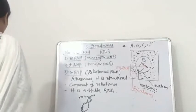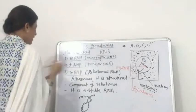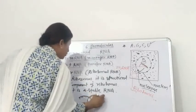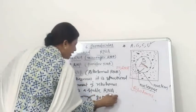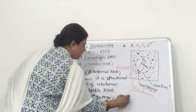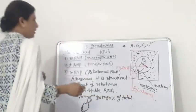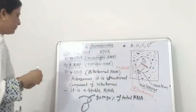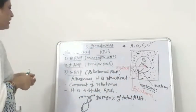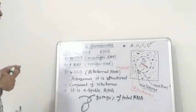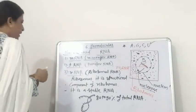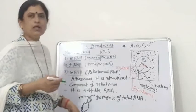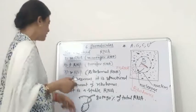rRNA forms 80 to 90 percent of the total RNA. This ribosomal RNA helps in the process of protein synthesis.